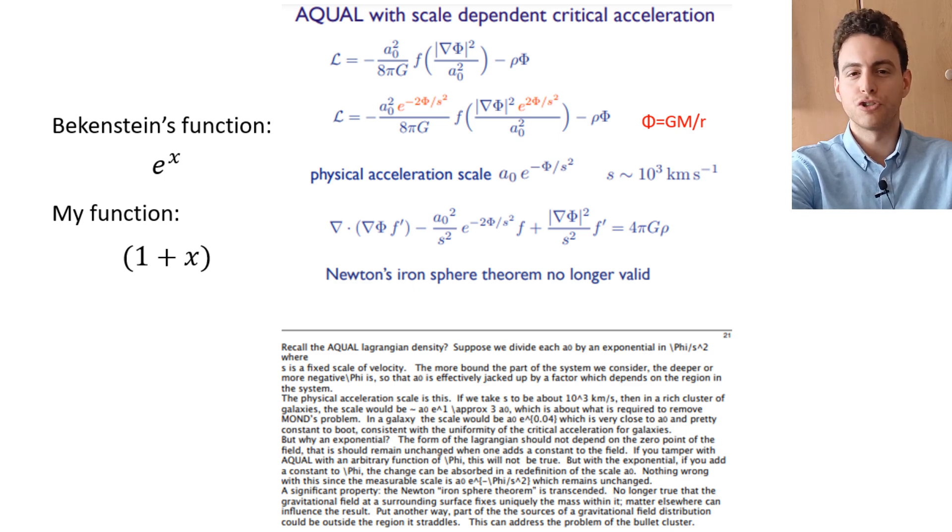Curiously, with this approach, one breaks with Newton's Shell theorem, and parts of the sources of a gravitational field distribution could be outside the region considered, which is what you need to explain the bullet cluster by modifying gravity.